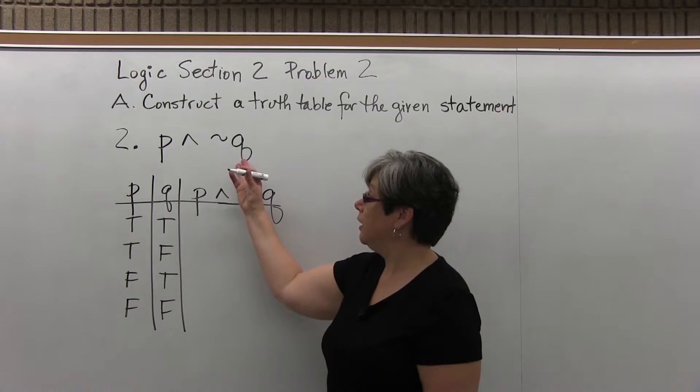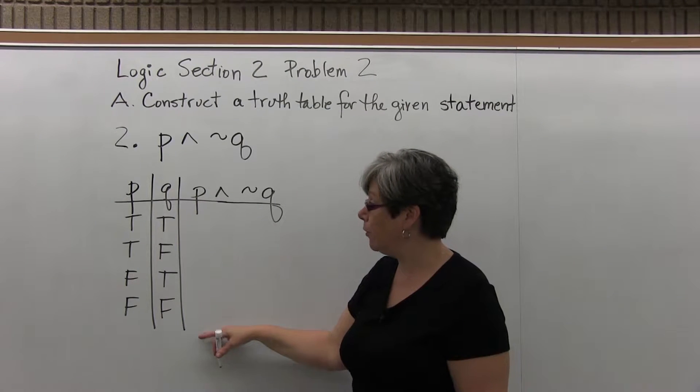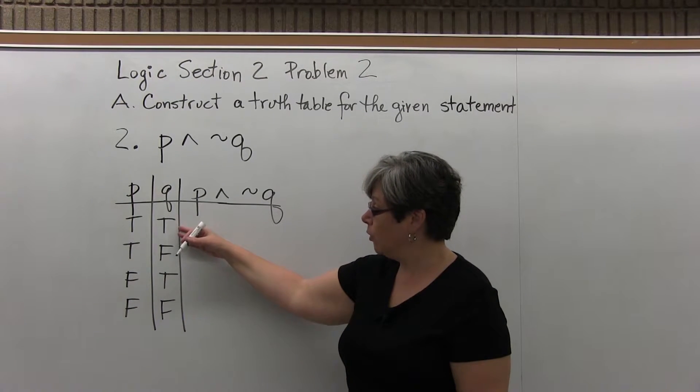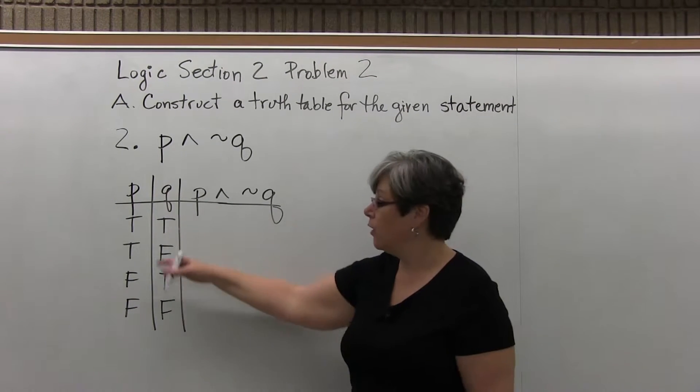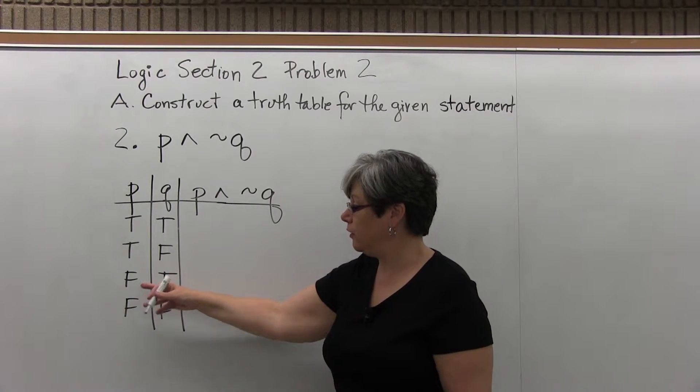So we have the conjunction of P and Q, which we have written in the truth table with the possible truth values, remembering that the Q column will alternate, whereas the P column will alternate by 2s, so 2 Ts and 2 Fs.